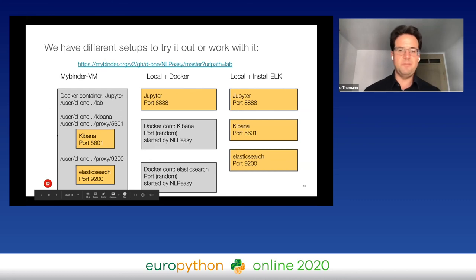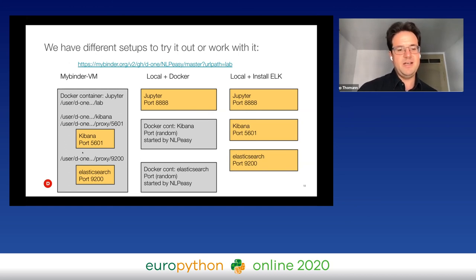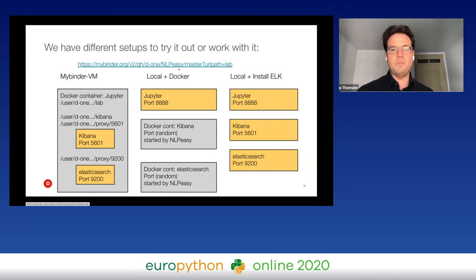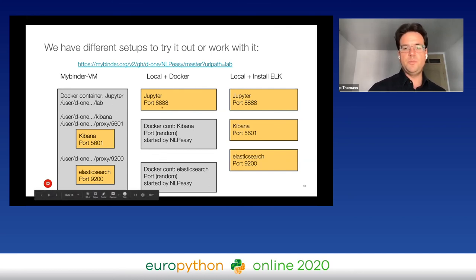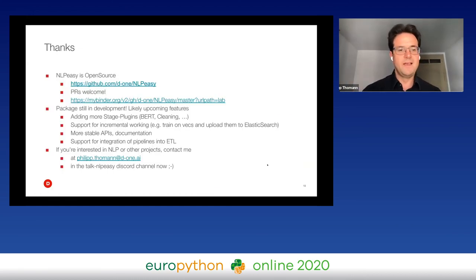You can also try it on Binder — we set it up so that Binder starts Docker containers with 2 GB of RAM, spinning up Kibana and Elasticsearch and forwarding ports over the URL. It should be in the master branch very soon. You can also run Kibana and Elasticsearch locally while running the notebook in Jupyter with two Docker containers.